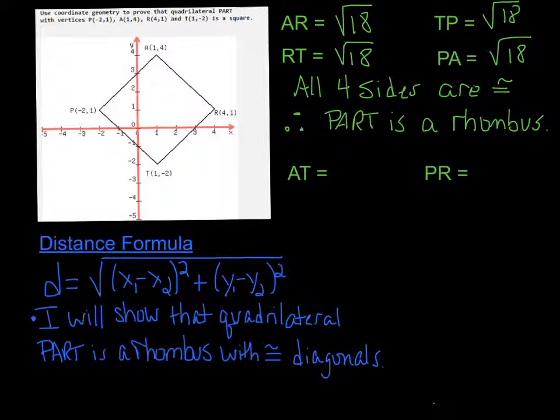Our next step will be to draw in each diagonal and then find the length of those diagonals. So I'm going to draw in diagonal AT and diagonal PR. You want to have the diagonals drawn in there because in the process of our proof, we will be referring to those.